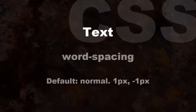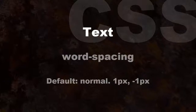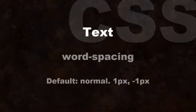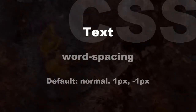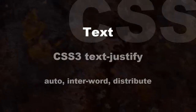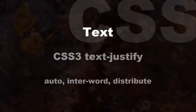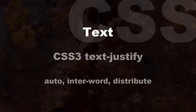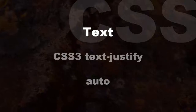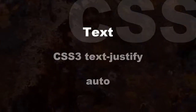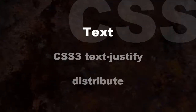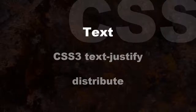Word-spacing increases or decreases the white space between words. Negative values are allowed; normal is the default. A length defines space in pixels, points, centimeters, ems, etc. In CSS3, the property text-justify can have one of three key values: auto (the browser determines how to achieve justification), inter-word (only the space between words is adjusted), or distribute (spacing between both words and letters is adjusted).